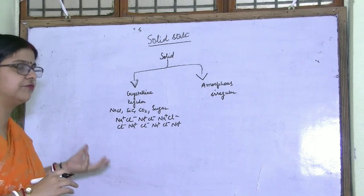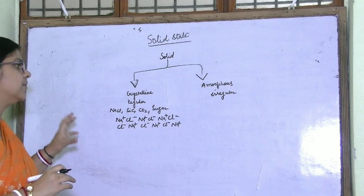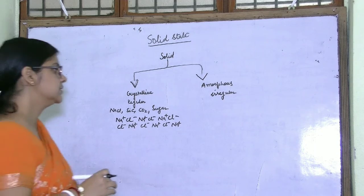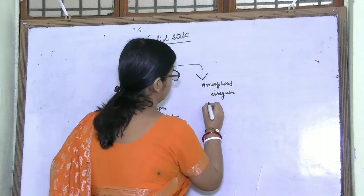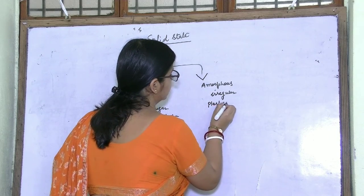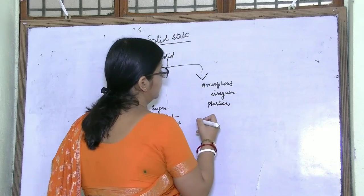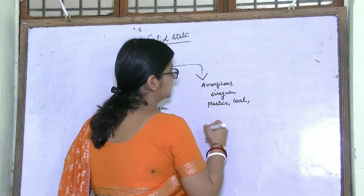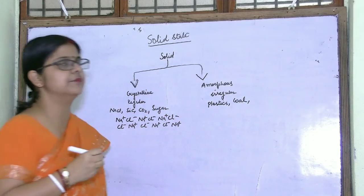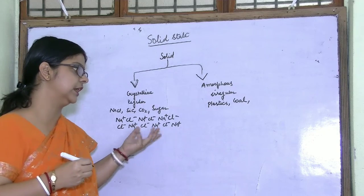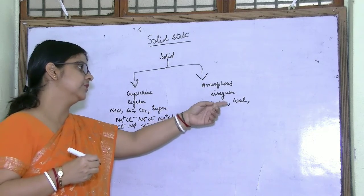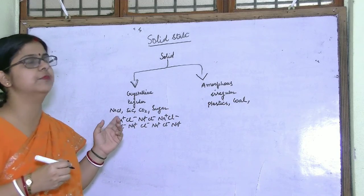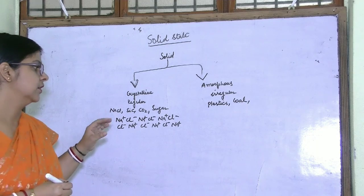But in the case of amorphous solids, the particles are not regularly arranged — they have irregular arrangement. Some examples of amorphous solids are plastics and coal. In coal, you can see that the arrangement is irregular, so it is also an example of an amorphous solid.